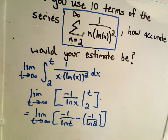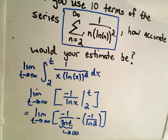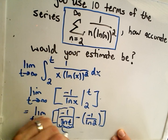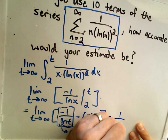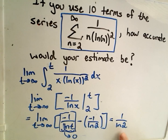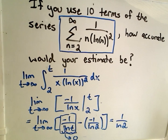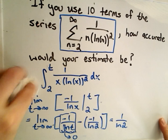As t goes to infinity, the natural logarithm of t goes to infinity, so the denominator of the first part grows arbitrarily large. One over a large number approaches zero, so the first term goes to zero. The two negatives make a positive, giving us 1 over the natural logarithm of 2. Since the improper integral converges to a finite number, the series converges by the integral test.